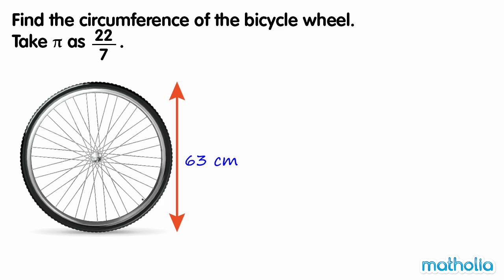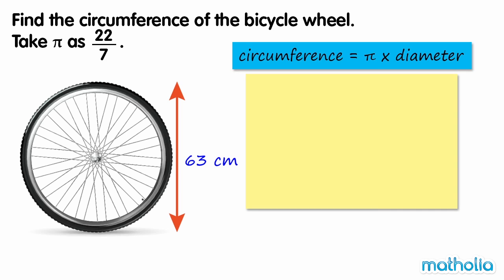Find the circumference of the bicycle wheel. Take pi as 22 over 7. Recall that the circumference of a circle is equal to pi times the diameter. This wheel has a diameter of 63 cm.